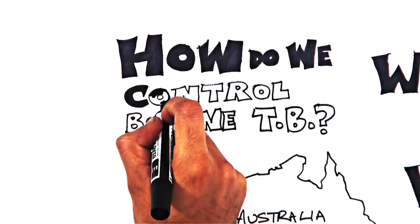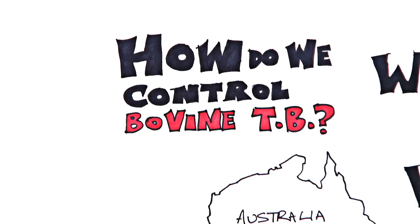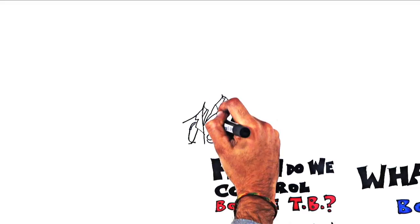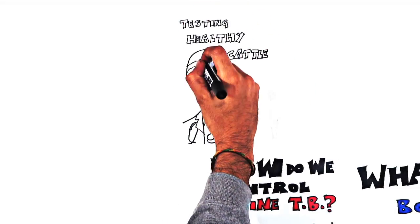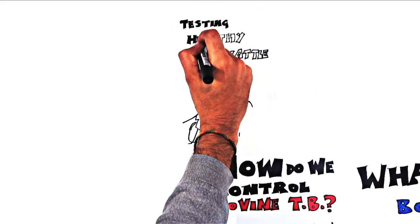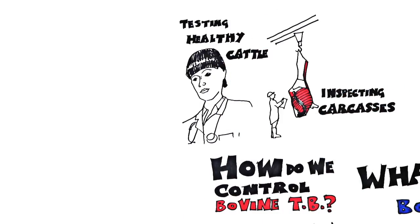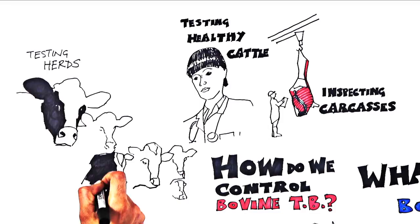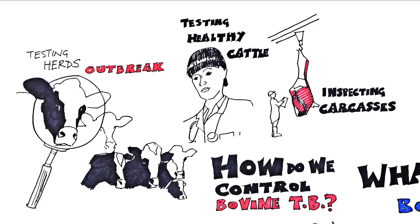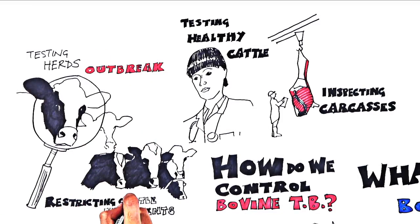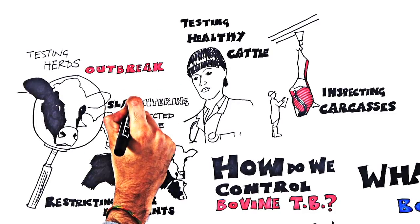How do we control bovine TB? We apply a comprehensive set of measures to control bovine TB, including looking for bovine TB by routinely testing healthy cattle and inspecting carcasses at abattoirs, testing herds where there's been an outbreak of bovine TB, restricting cattle movements and slaughtering infected cattle.